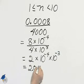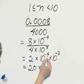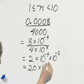2.0 times 10 to the product rule, negative 7. 2.0 times 10 to the negative 7.